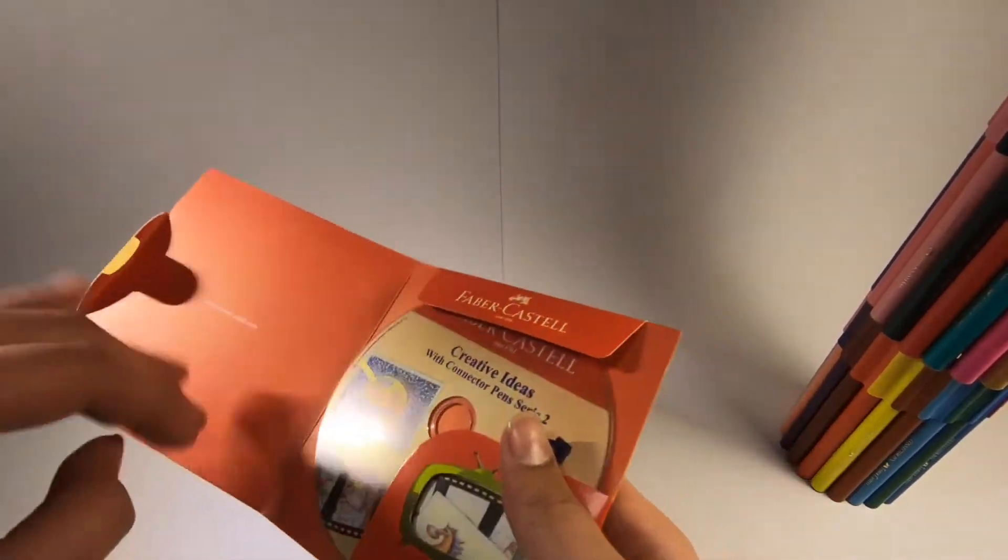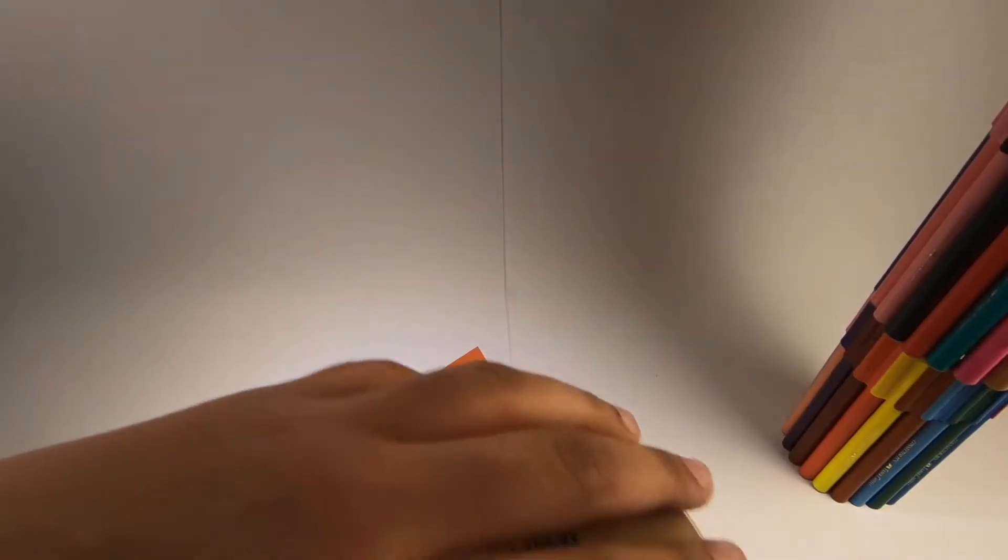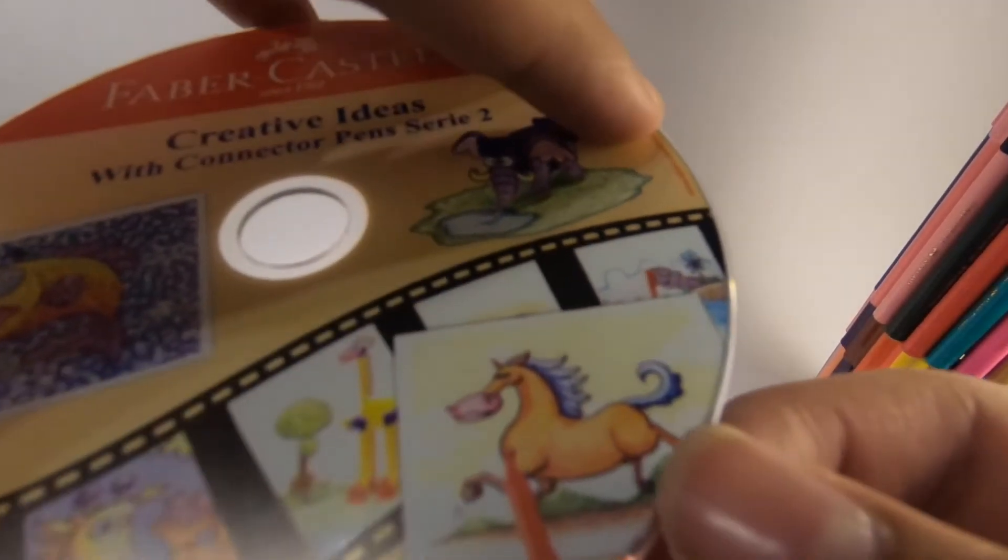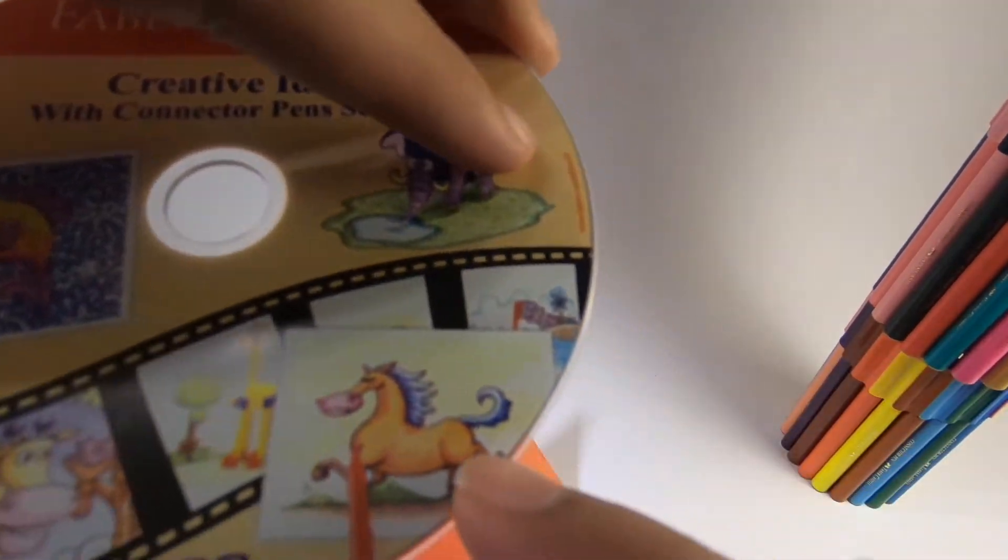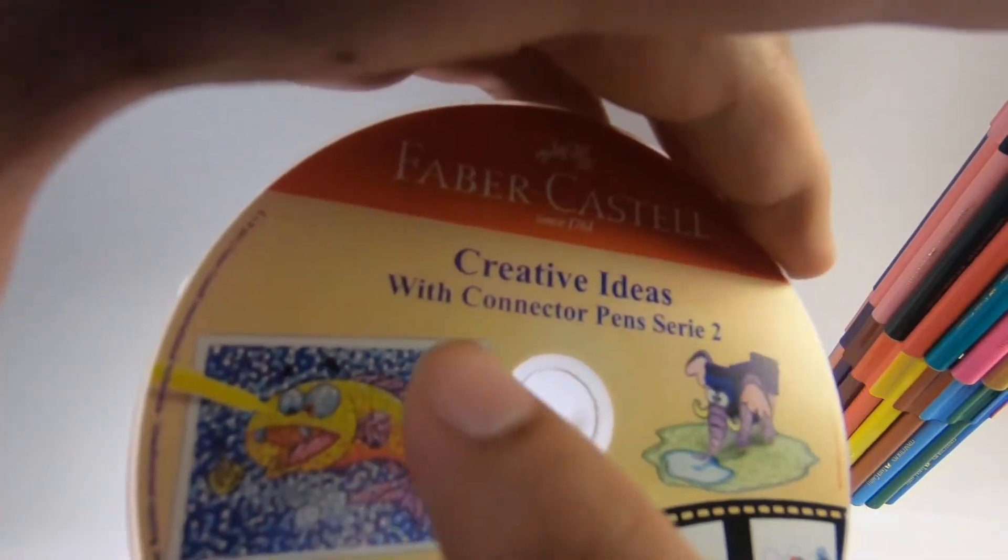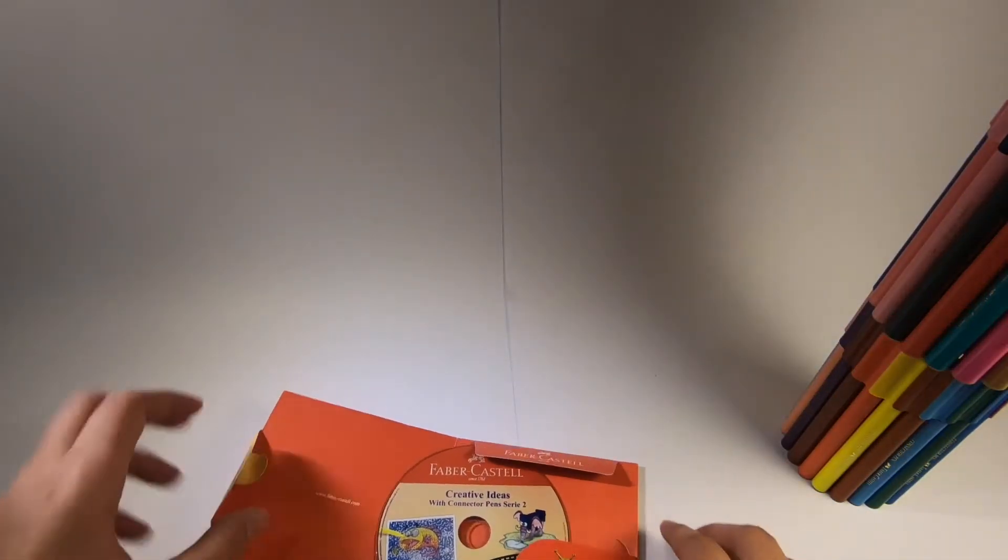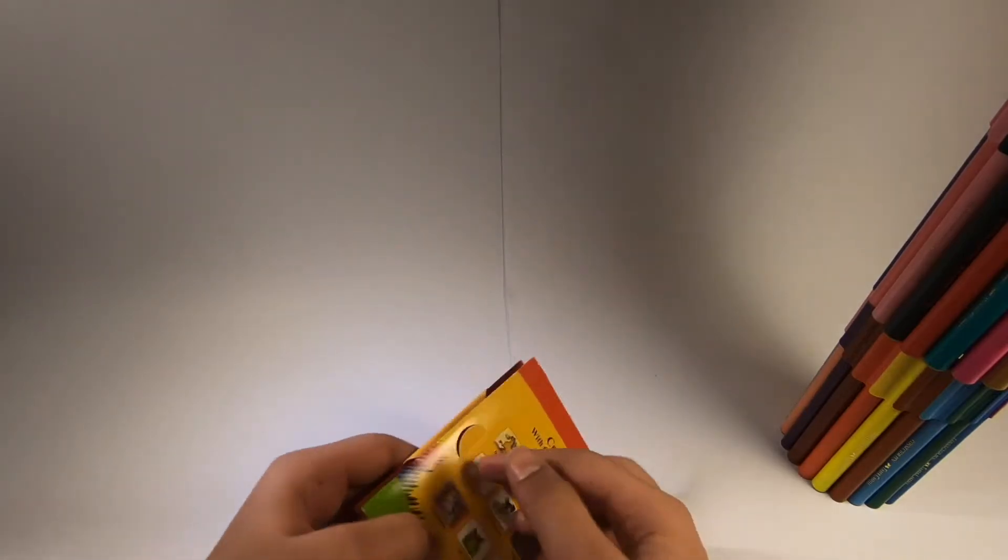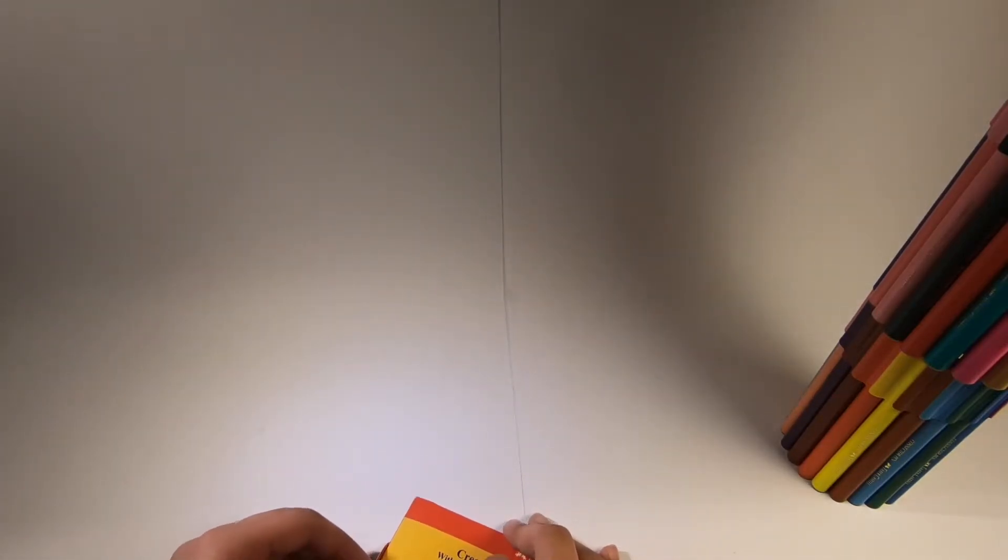I would like now to take a look at this. This is a CD which you get with the markers. This basically shows you to create something. We have a little fish over here, we had a horse behind that. Let's just put this back and let's see what's coming up ahead.